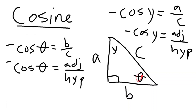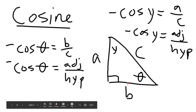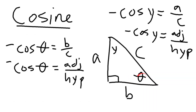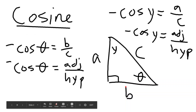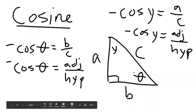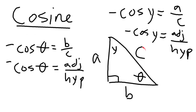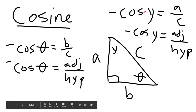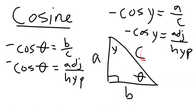Next we have cosine. Cosine is adjacent over hypotenuse — it's like the side next to you. So cosine of theta: since b is next to theta, b is the numerator and c is the hypotenuse, so cosine of theta equals b over c. Cosine of y is adjacent, which is a, over hypotenuse c, so cosine y equals a over c.